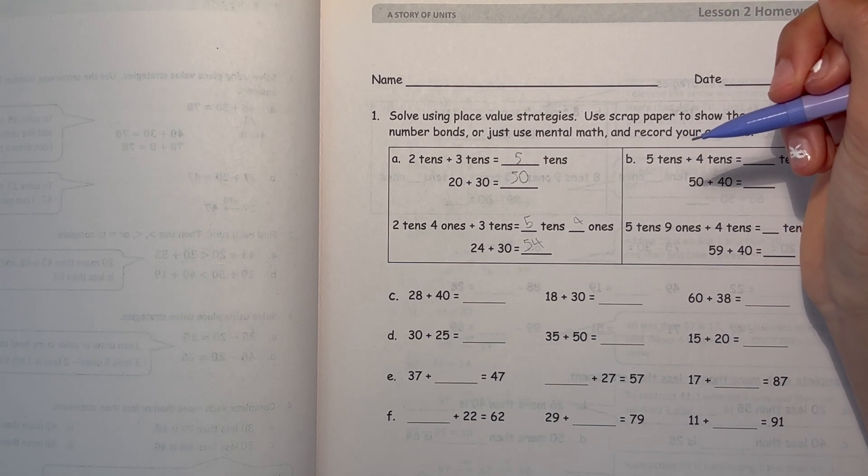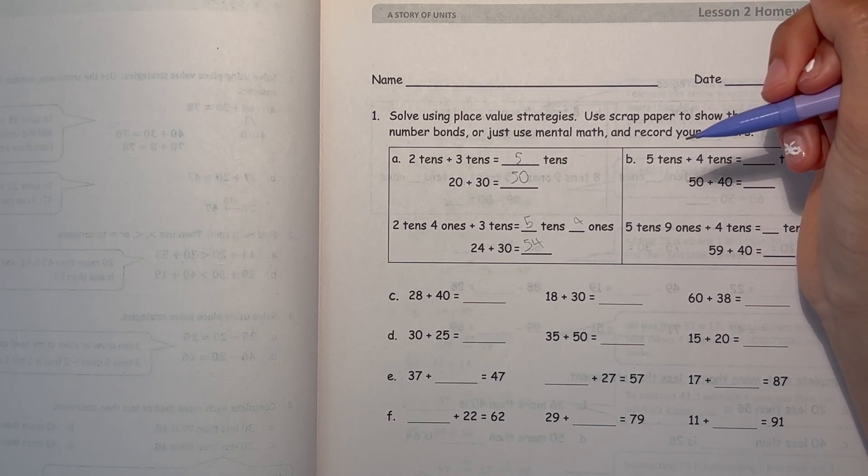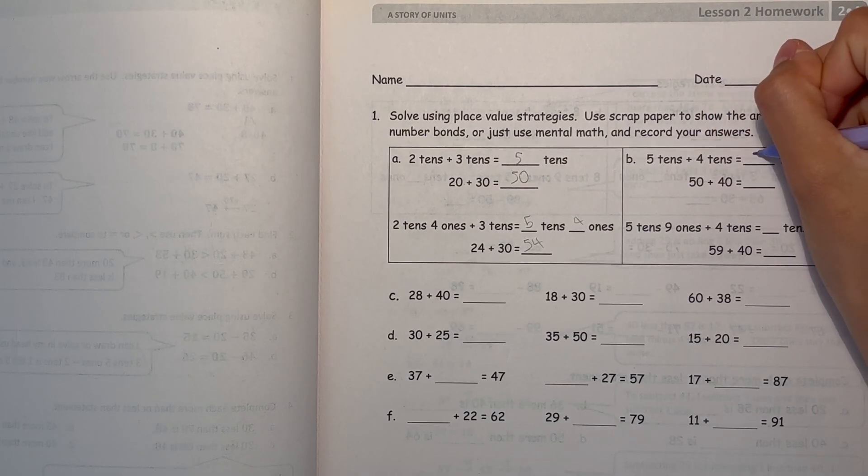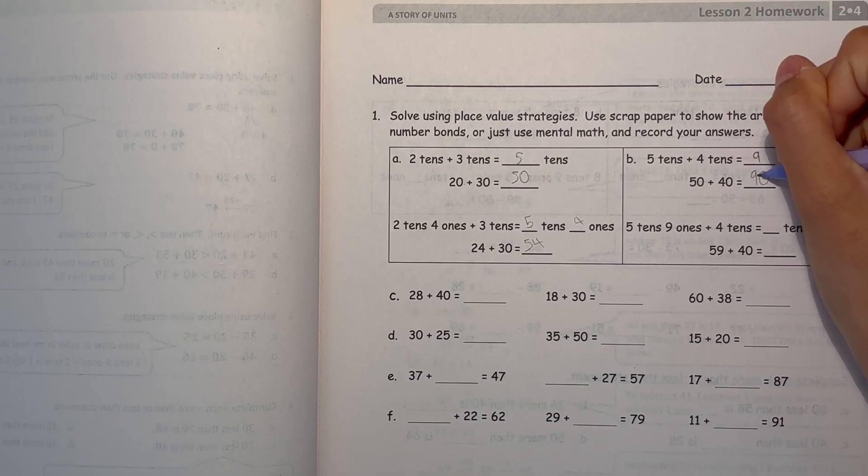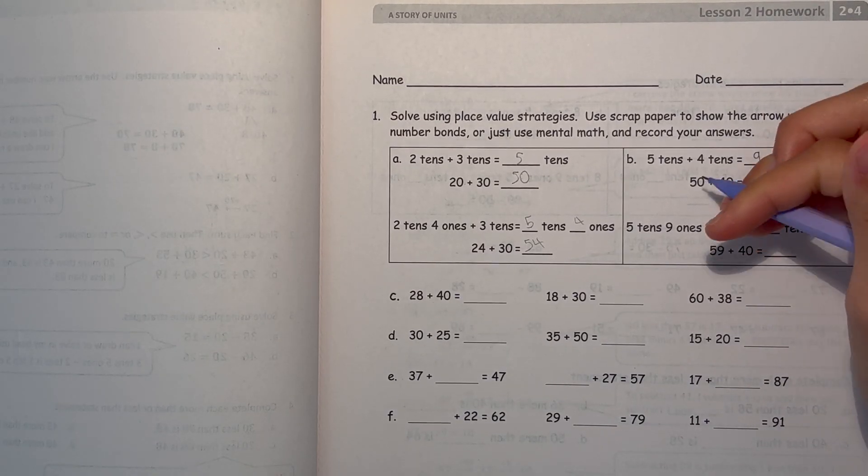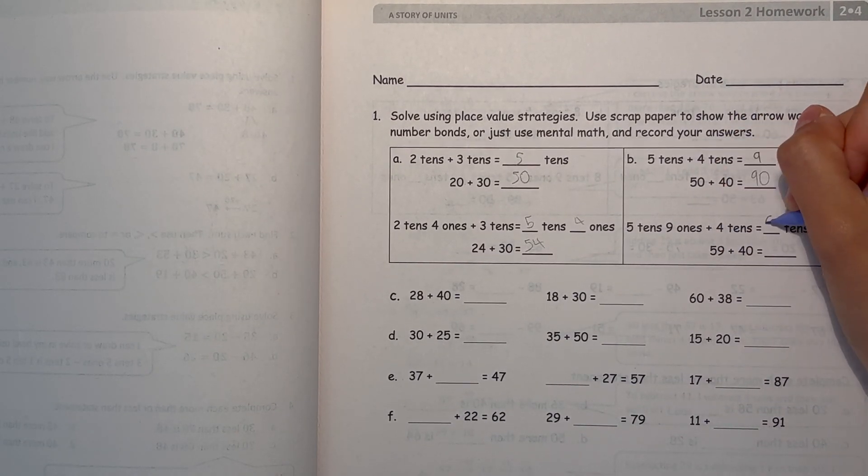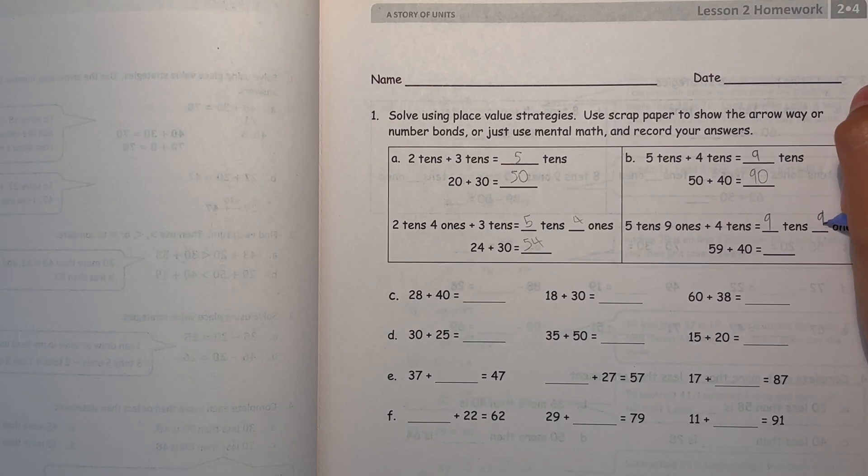Alright, now B, 5 tens plus 4 tens. So that's 9 tens. So 50 plus 40 is 90. And now 5 tens, 9 ones plus 4 tens. That's 9 tens and the 9 ones doesn't change. So 59 plus 40 is 99.